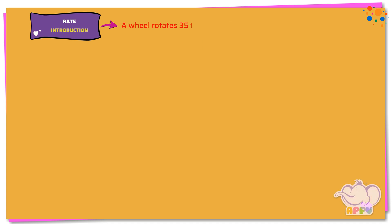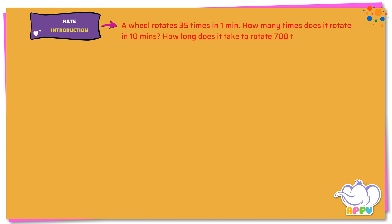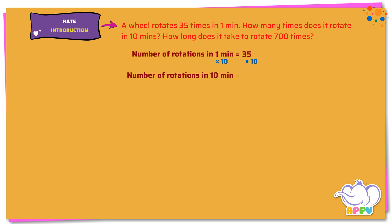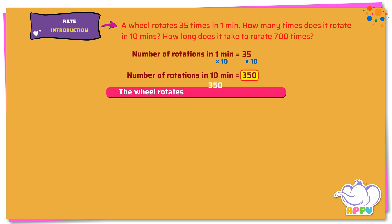A wheel rotates 35 times in one minute. How many times does it rotate in 10 minutes? How long does it take to rotate 700 times? Number of rotations in one minute equals 35. To find the number of rotations in 10 minutes, we multiply both sides by 10. 10 times 1 minute equals 10 minutes. 35 times 10 equals 350. So the wheel rotates 350 times in 10 minutes. This answers the first part of the question.